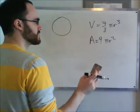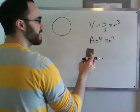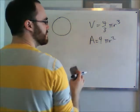The way I think about it is, area is a two-dimensional thing, so it has two factors of r. Volume is a three-dimensional thing, so it has three factors of r.